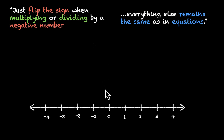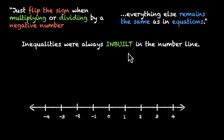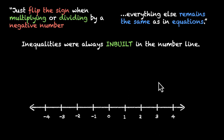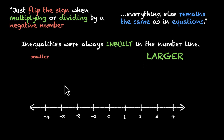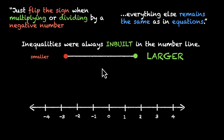The first thing to note is that inequalities are always built into the number line. No two numbers on the number line are equal — one will definitely be greater than or less than the other. There is a clear direction: numbers on the right are always greater than numbers on the left. If you color-code them, the left one (red) is smaller than the right one (green).